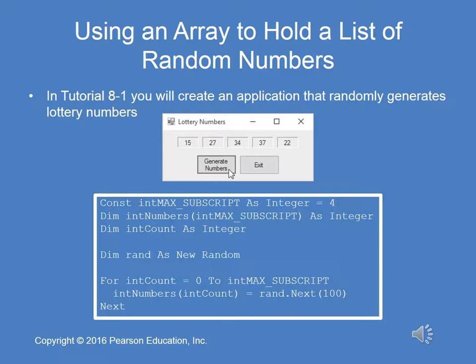Because it's declared as a constant, we can use it as the max subscript. So we're declaring an array int numbers — int max subscript is going to be 4 — as integer. Then we declare an int counter, int count, as an integer. And we declare a random number, rand.